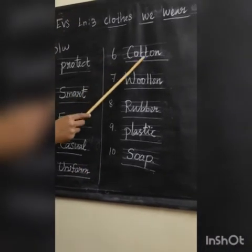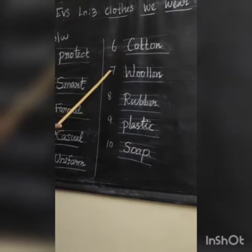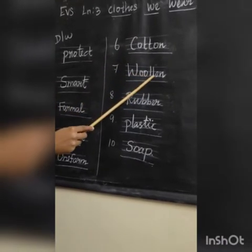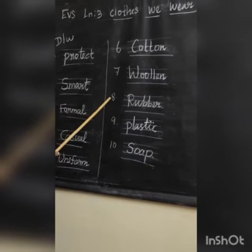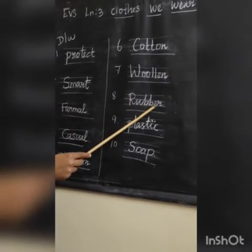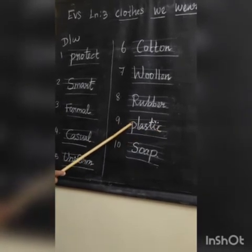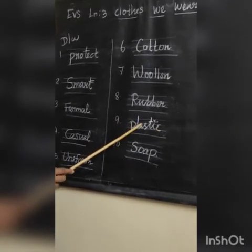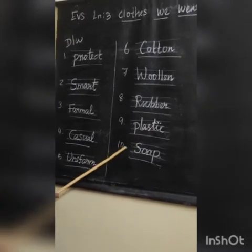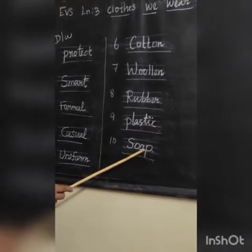Sixth one: cotton, C-O-T-T-O-N, cotton. Seventh one: woolen, W-O-O-L-L-E-N, woolen. Eighth one: rubber, R-U-B-B-E-R, rubber. Ninth one: plastic, P-L-A-S-T-I-C, plastic. Tenth one: soap, S-O-A-P, soap.